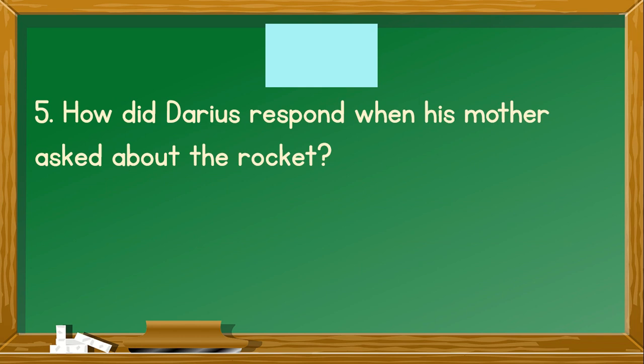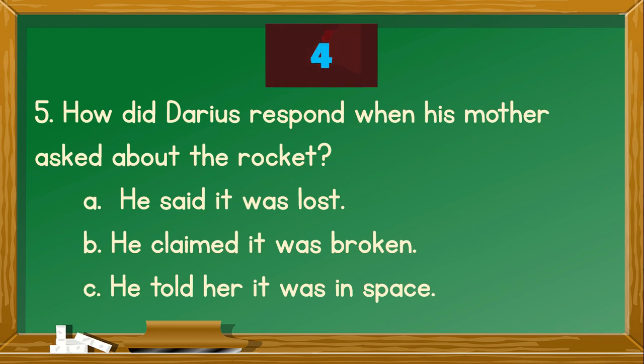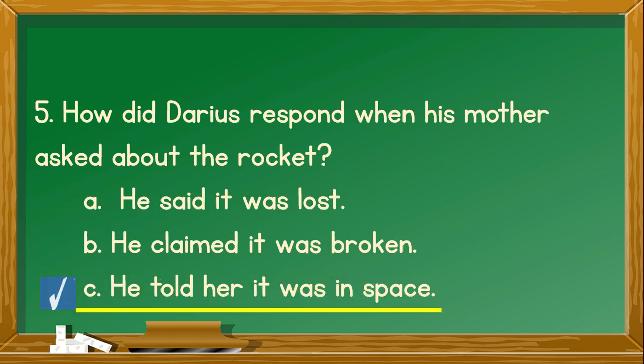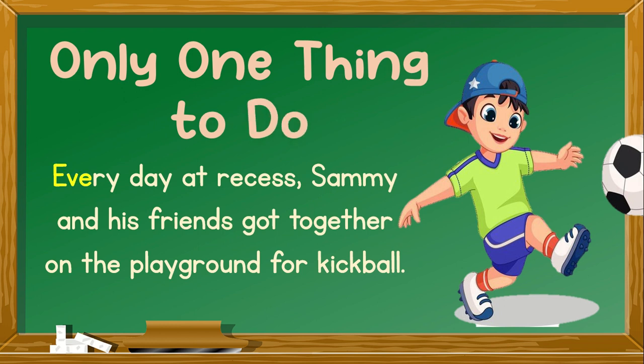Number 5. How did Darius respond when his mother asked about the rocket? A. He said it was lost. B. He claimed it was broken. C. He told her it was in space. You're right, the correct answer is C. He told her it was in space. How many scores did you get? Wow, that's a good job. Let's now proceed to the next story.